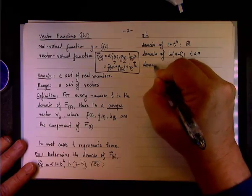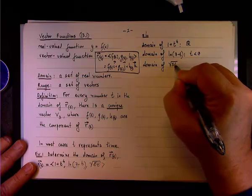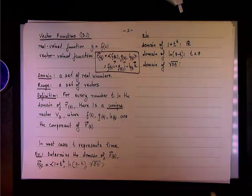And the last one, that's probably easier, domain of square root of 5 over t. What are the restrictions here?